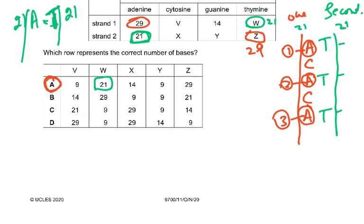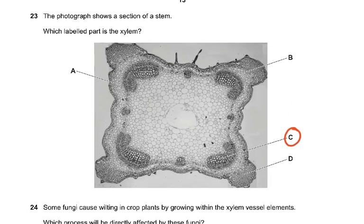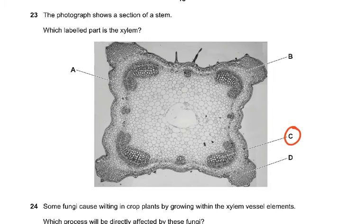Question 23: The photomicrograph shows a section of a stem. Which labelled part is the xylem? You know this has got 4 vascular bundles here. The xylem shows these big circles, these huge circles which are very typical of xylem with these thick walls and hexagonal structures which I always look at and identify very easily. So C was the answer.